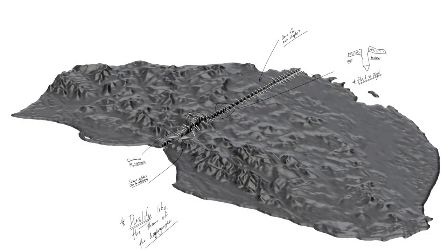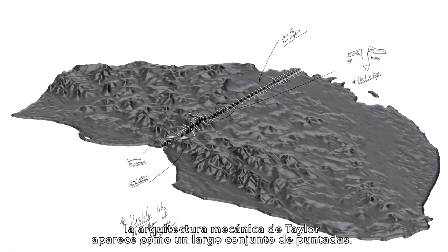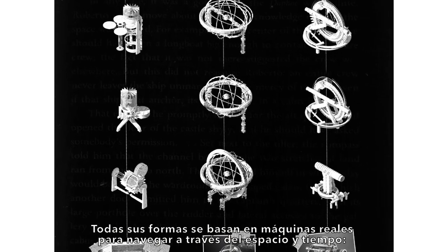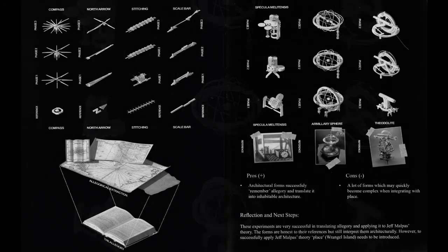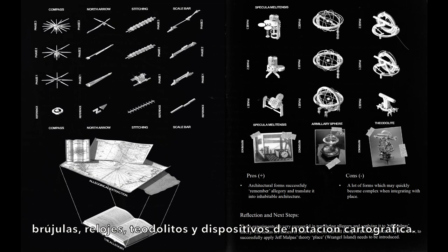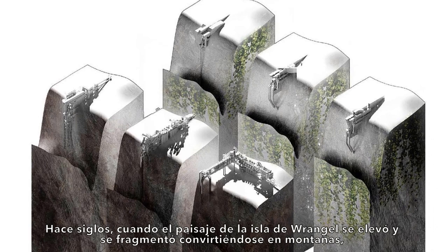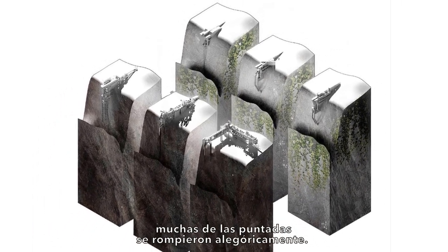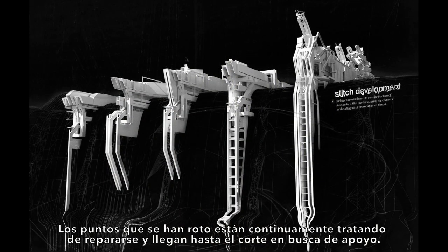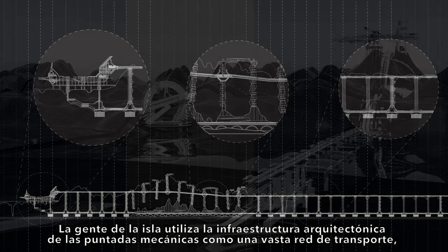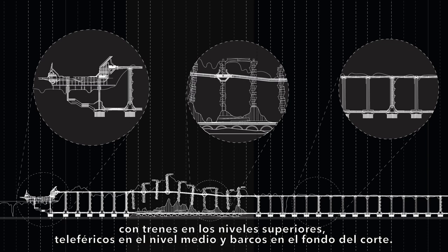Like the binding of a book, Taylor's machine-like architecture appears like a long set of stitches. Each stitch represents a type of allegorical machine; their forms are all based on actual machines for navigating place and time — compasses, clocks, theodolites, and cartographic notation devices. Centuries ago, as the landscape of Wrangell Island rose upward and fragmented to become mountains, many of the stitches have allegorically broken. The stitches that have become broken are continually trying to repair themselves, and they reach down into the cut for support. The people of the island use the architectural infrastructure of the mechanical stitches as a vast transport network, with trains on the upper levels, cable cars in the middle level, and boats at the bottom of the cut.